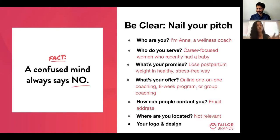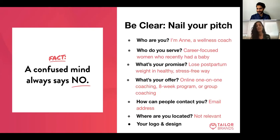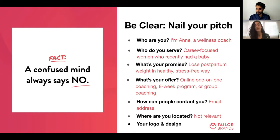The fourth element is your actual offer — what do you provide? Is it a hair product, coaching, or a house appraisal? Then, how can people contact you? That's your email, contact form, or phone number. And where are you located? You'd be surprised how many people offer services in a specific city but it's not clear on their Facebook page. So many people focus on beautiful designs but forget to make sure visitors know exactly what they do, what the offer is, and how to contact them.